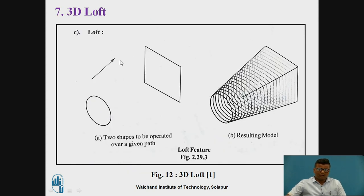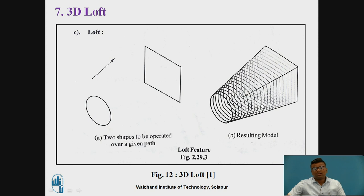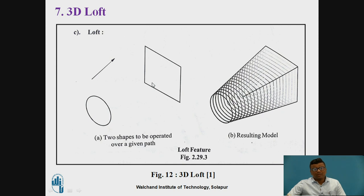Loft. Here, suppose on one plane you have created one circle and on another plane you have created one rectangle. Using multi-section solid you can join this circle and the rectangle at one time, resulting in different types of models. For example, if you want to create a model of a monitor, you can use the loft section or multi-section solids — where one surface is one geometrical entity such as a circle and the other side is a rectangle. You can create these surfaces with the help of multi-section solid, which is called 3D loft.